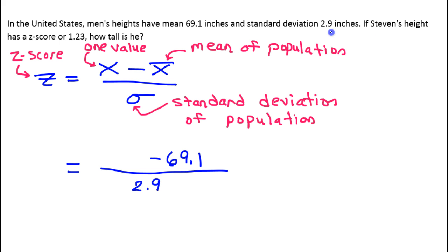Stephen's height has a z-score of 1.23. So here's 1.23 would be the z-score. The thing that we're not given is one particular value. In other words, Stephen's height. So that's what we're being asked to find. Stephen's individual height is the one thing that we're not given.